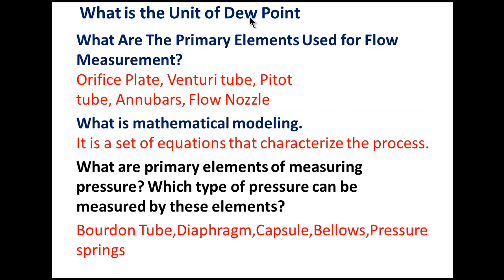What is the unit of dew point? Dew point is the temperature needed for condensation, so its unit is the same as temperature — degrees. What are the primary elements used for flow measurement? Primary elements for flow measurement include orifice plate, venturi tube, pitot tube, and flow nozzles. What is mathematical modeling? Mathematical modeling is a set of equations that characterize the process — typically a set of differential equations that give complete knowledge of how the process works and how flow behaves.